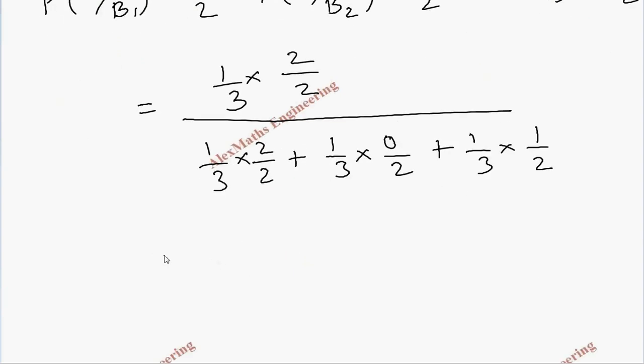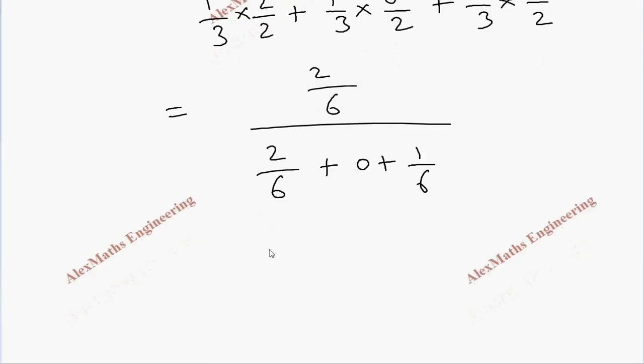So, here the numerator is 2 by 6. Denominator is 2 by 6 plus 0 plus 1 by 6. So, when there is a common denominator we can cancel. So, we have 2 by 6 and by adding this it becomes 3. After cancelling this we get 2 by 3.